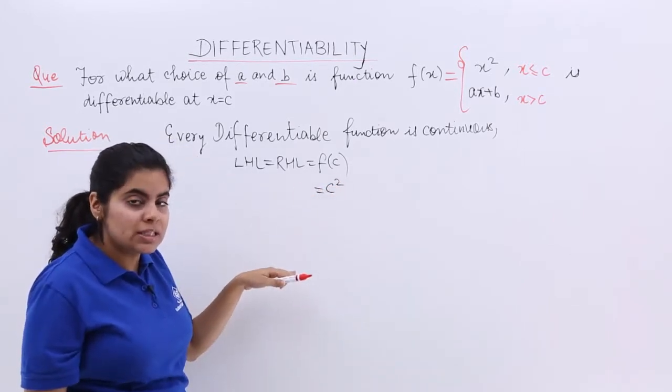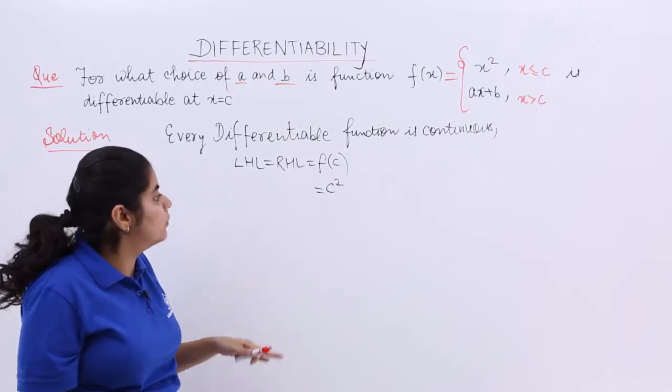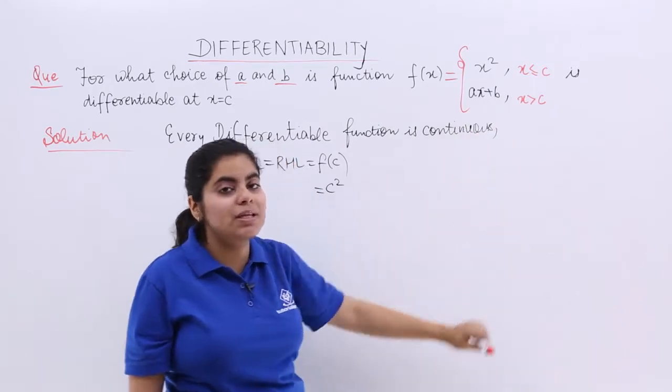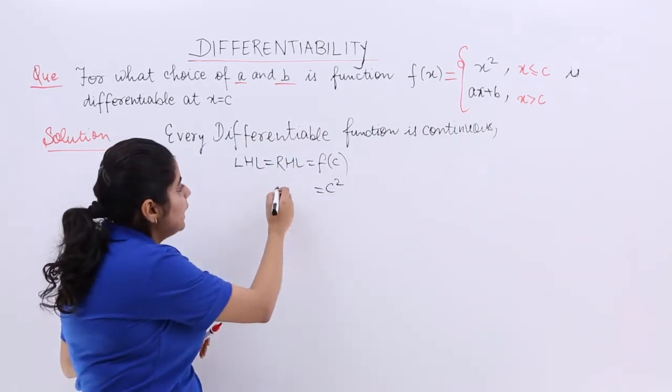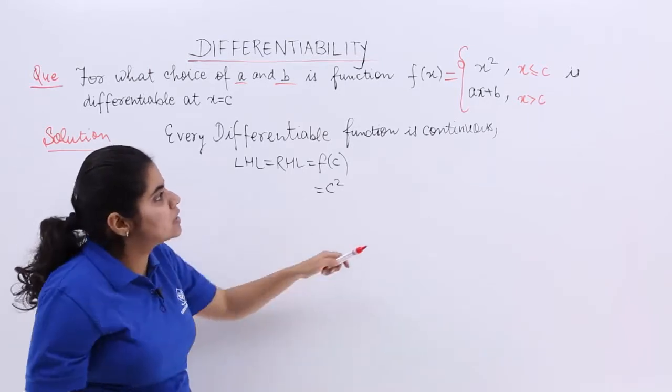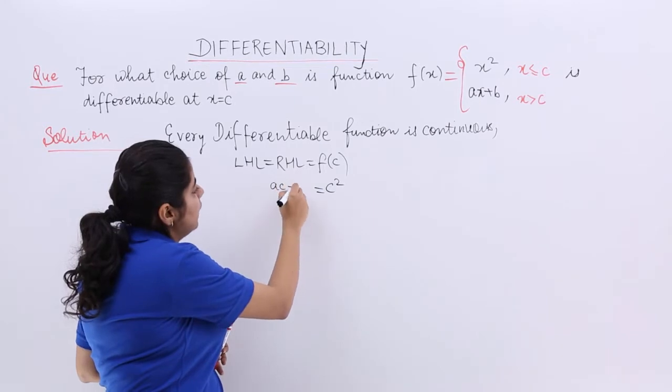And what about the limits? The limits should exist and they should exist finitely and equal. So, what is the right hand limit? The right hand limit is Ax plus B. So, directly without any limits and putting of x tending to c, I just directly substitute A into c plus B is the equation that I get.